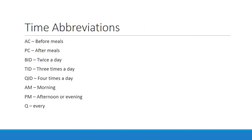Some timed abbreviations: AC is before meals, PC is after meals, BID is twice a day, TID is three times a day, QID is four times a day, AM is morning, PM is afternoon or evening, and Q by itself means every. You can add Q to other abbreviations, and we'll see some of those on our list of abbreviations that are not recommended.